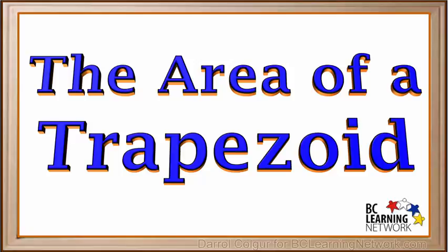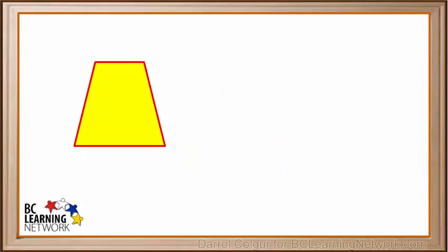Here we'll show you how to determine the area of a trapezoid. A trapezoid is a four-sided object in which two of the sides are parallel.